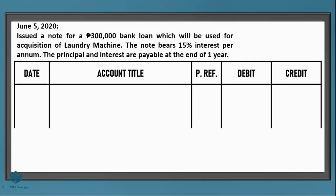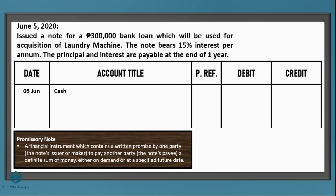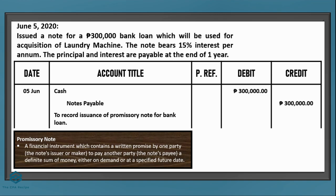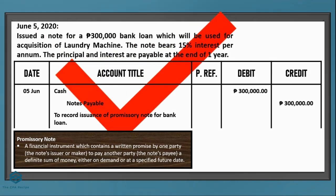Let's put the date first. We received cash as part of the loan, so we need to increase cash — debit cash. Next, we issued a promissory note, which is evidence of an obligation. Although we actually borrowed from the bank, the credit will go to Notes Payable instead of Loan Payable. Don't forget the explanation. Since the amount is given, let's put 300,000 pesos under the debit and credit columns. If correct, give yourself a check.